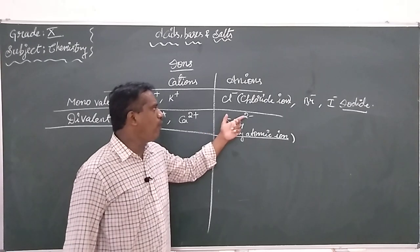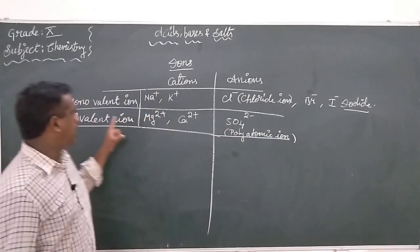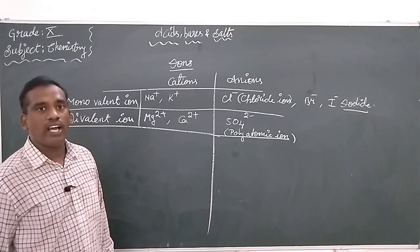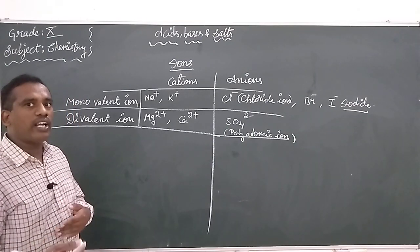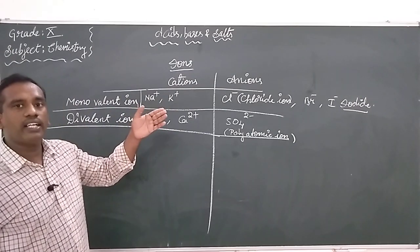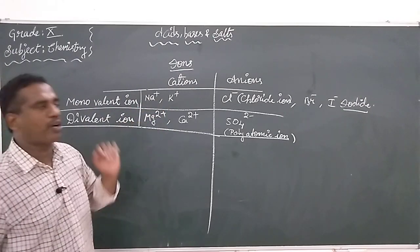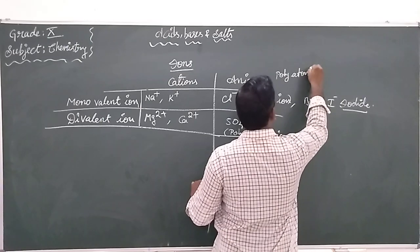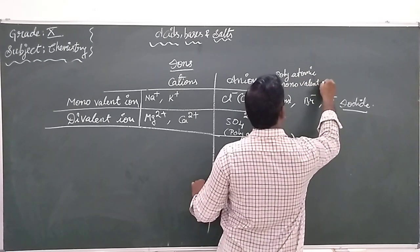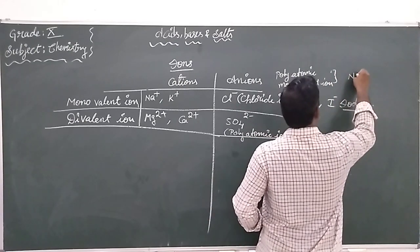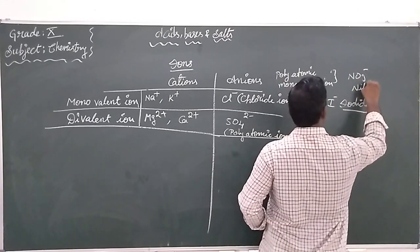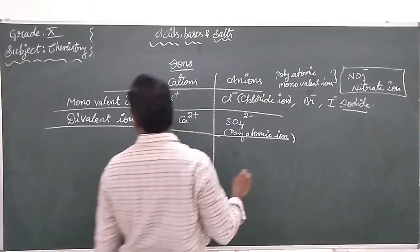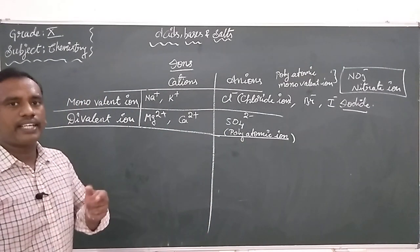SO4 is a divalent anion. Now for a monovalent polyatomic ion — one having more atoms but only one charge — we can take NO3 minus, called the nitrate ion. NO3 minus is called the nitrate ion.